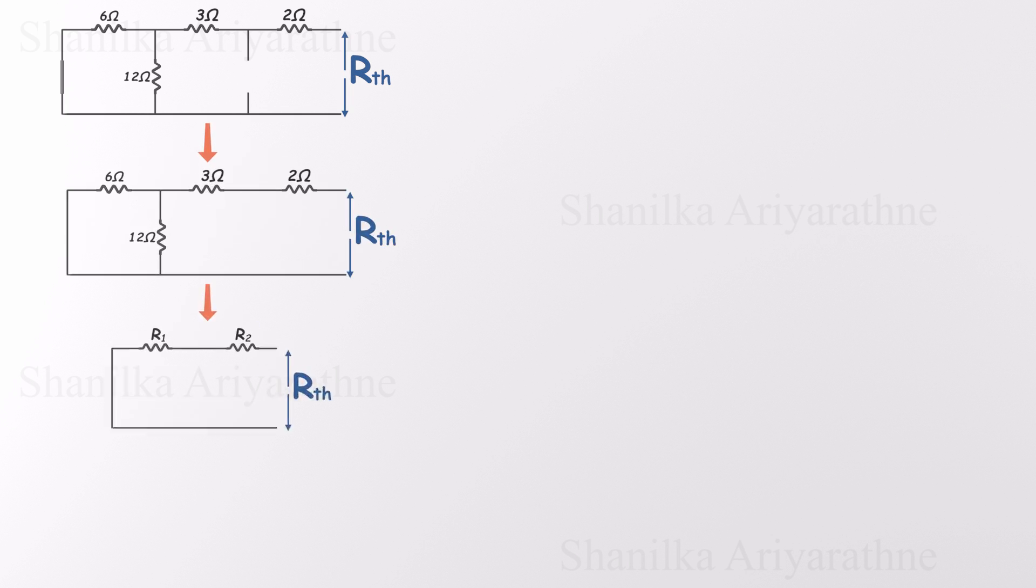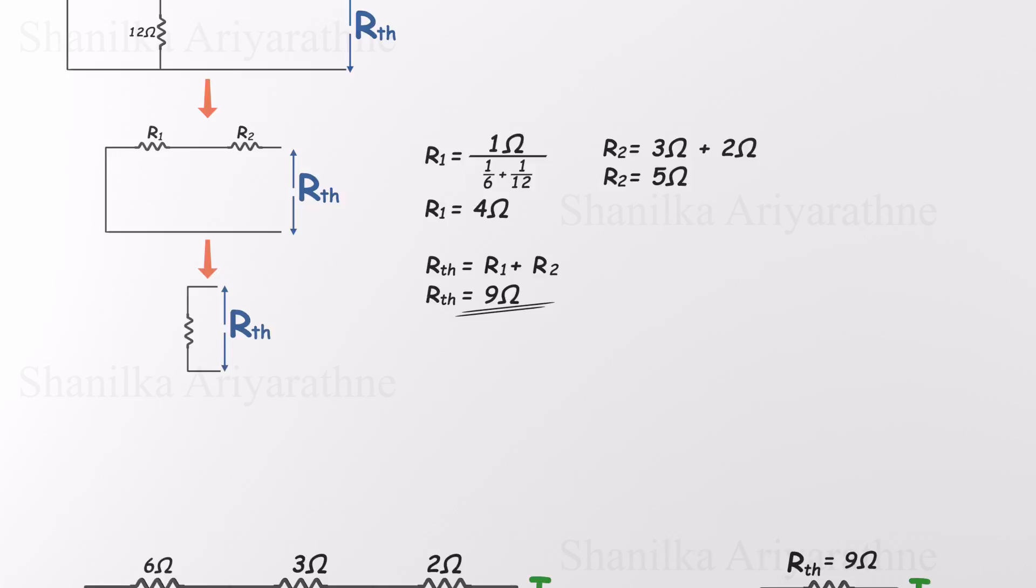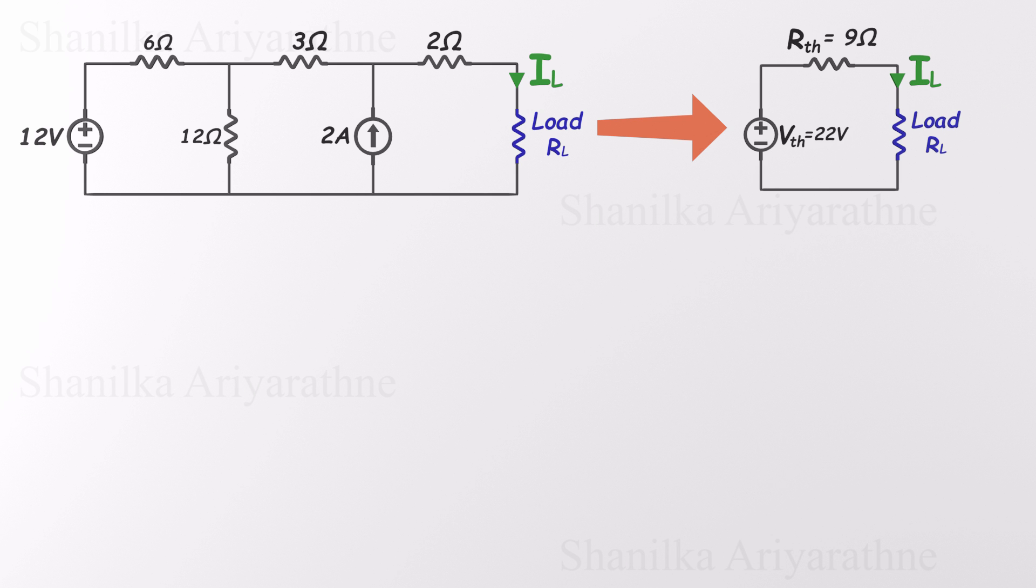We can simplify the circuit step-by-step. First, we spot a pair of parallel resistors, which combine to form a 4-ohm resistor. Then there's a pair of series resistors, which add up to 5-ohms. Finally, those two simplified resistors, 4-ohms and 5-ohms, are in series, so we just add them together. That gives us the total Thevenin resistance: RTH is 9-ohms. So now we've got the full Thevenin equivalent circuit, a 22-volt source in series with a 9-ohm resistor. And with that, we're ready to apply the maximum power transfer theorem.